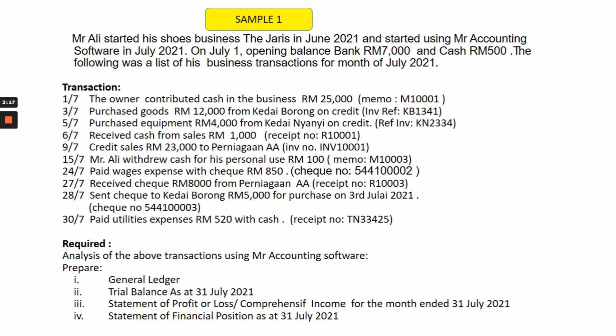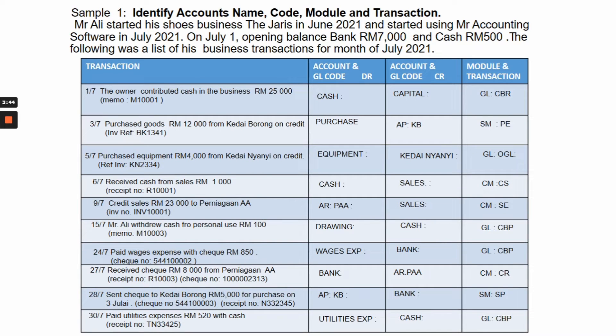You are also required to prepare a trial balance, a statement of profit or loss for the month ending 31st July 2021, and a statement of financial position as at 31st July 2021. Before preparing these reports, we must look at the account maintenance. This shows the transaction, the account and general ledger code on the debit side, and the account and general ledger code on the credit side, and the module.